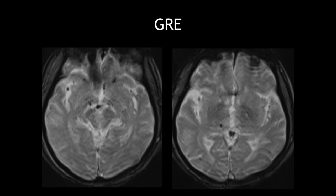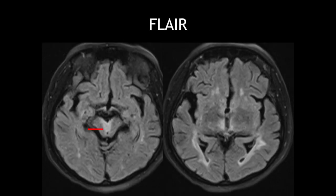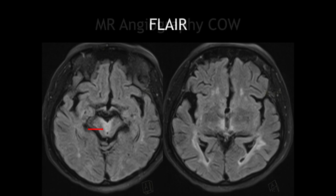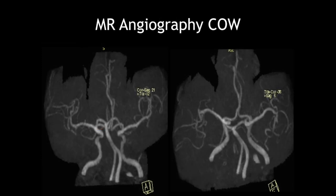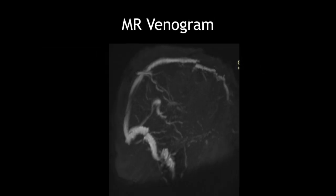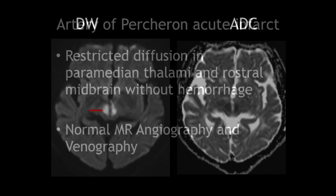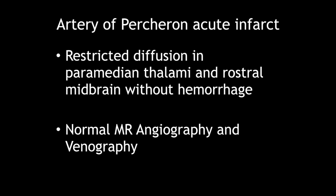No blooming was seen to suggest hemorrhage, and the lesions appeared hyper-intense on FLAIR images. MR angiography of the brain did not show any abnormality, and neither did the MR venogram. This restricted diffusion in the paramedian thalami and rostral midbrain with normal angiography and venography was suggestive of an artery of Percheron acute infarct.